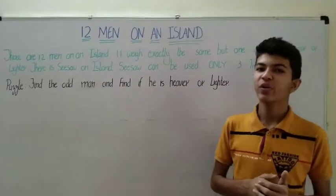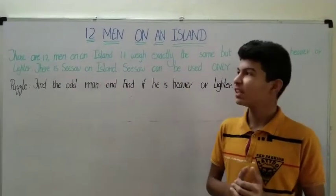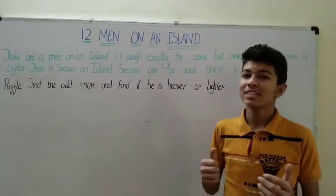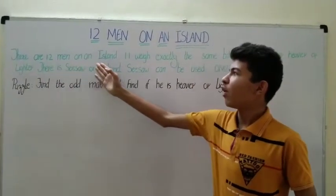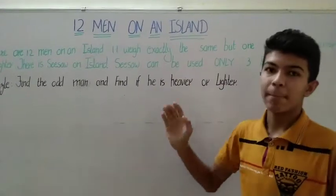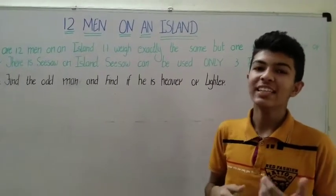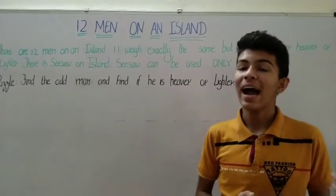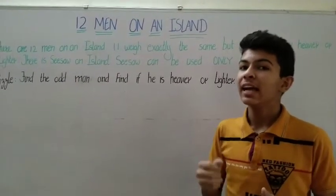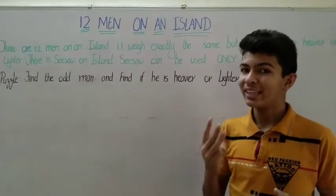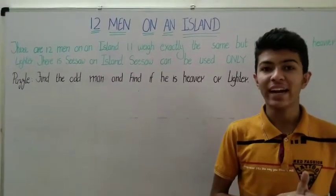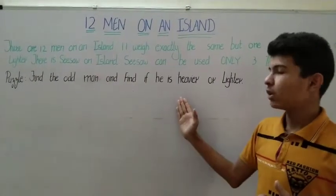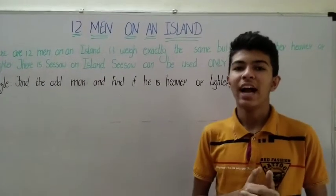Hello friends, this is Pravi and today we are going to solve a tricky puzzle. The name of the puzzle is the 12 Men on an Island. There are 12 men on an island — 11 weigh exactly the same but one weighs either heavier or lighter. There is a seesaw on the island that should not be used more than three times. Can you find who is the odd man and whether he weighs lighter or heavier?